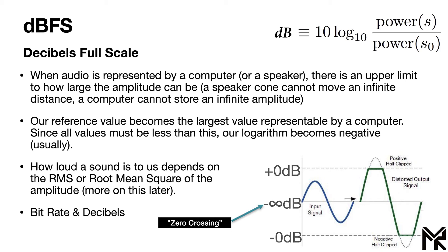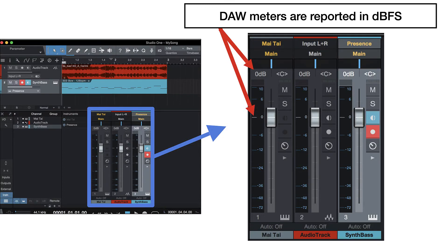That's why a zero crossing within a digital audio workstation is represented as minus infinity dB, with plus zero dB on top and minus zero dB on the bottom, representing the instantaneous positive and negative axes of the maximum value your computer can represent. If you look at your DAW, the meters on your mixer are represented in dBFS — you see zero, minus six, minus twelve, minus twenty-four — it says 'dB' but these are actually dB full scale, not dB SPL.